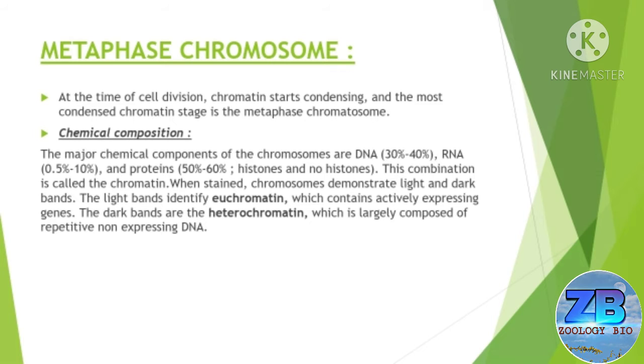When stained, chromosomes demonstrate light and dark bands. The light bands identify euchromatin, which contains actively expressing genes. The dark bands are the heterochromatin, which is largely composed of repetitive, non-expressing DNA.